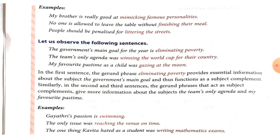Now students, some more examples are given here. First: 'My brother is really good at mimicking famous personalities.' Here, the gerund phrase 'mimicking famous personalities' follows the preposition 'at' and completes the meaning. Second: 'No one is allowed to leave the table without finishing their meal.' Here, the gerund phrase 'finishing their meal' follows the preposition 'without'. Third: 'People should be penalized for littering the street.' Here, the gerund phrase 'littering the street' follows the preposition 'for'.